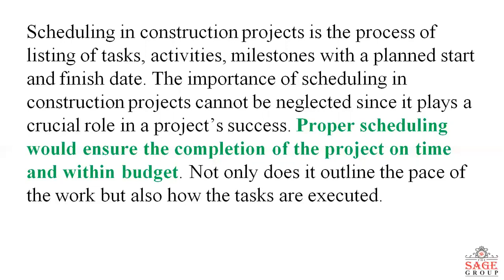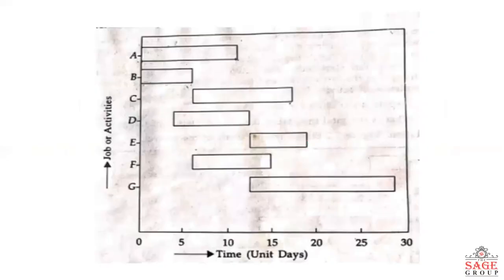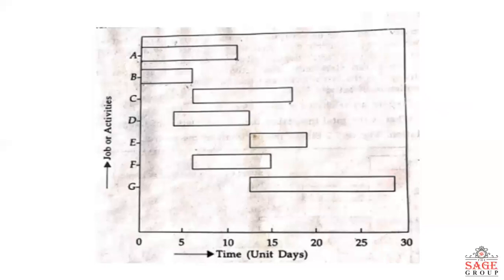Not only does scheduling outline the pace of work, but also how tasks are executed. In a scheduling diagram, the x-direction represents time or days, and the y-direction represents the jobs or activities. We divide each task using a work breakdown structure, breaking each project into separate parts.